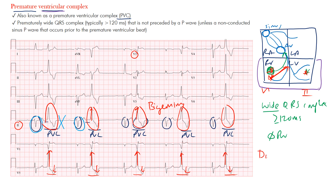That discordance is normal in these complexes. If you recall with bundle branch blocks, you tend to see the same thing — discordance is normal in those cases too. So to summarize: premature ventricular complexes come early, originate from the ventricles, and are wide bizarre-appearing complexes. You can use the EKG to help identify where they originate. In V1 the impulse moves away from V1, and in lead I it's going mostly toward it. Make sure you're using these PVCs when trying to localize the origin.